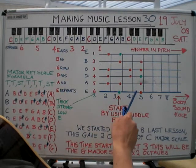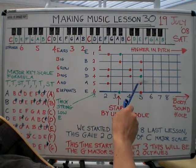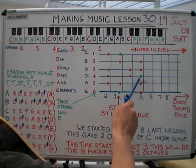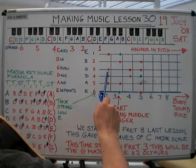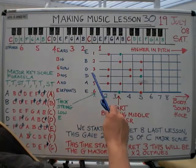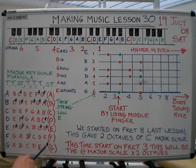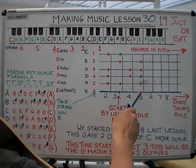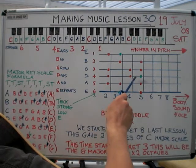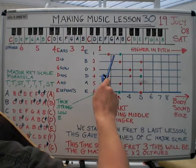To understand the differences, we apply tone, tone, semitone, tone, tone, tone, semitone. That gives us the G major scale: G A B C D E F sharp G. Over two octaves that's: G A B C D E F sharp G, A B C D E F sharp G.